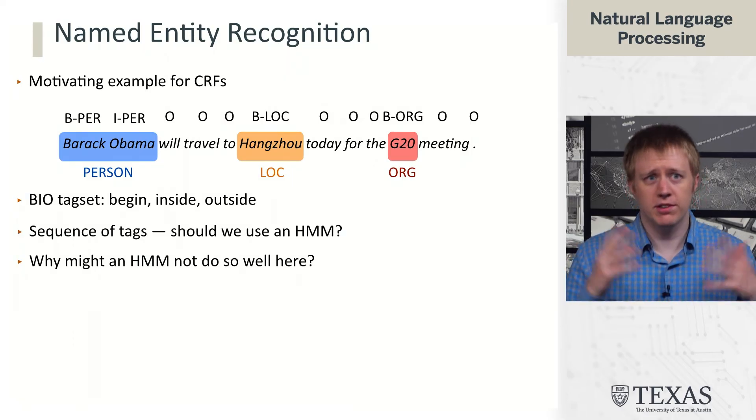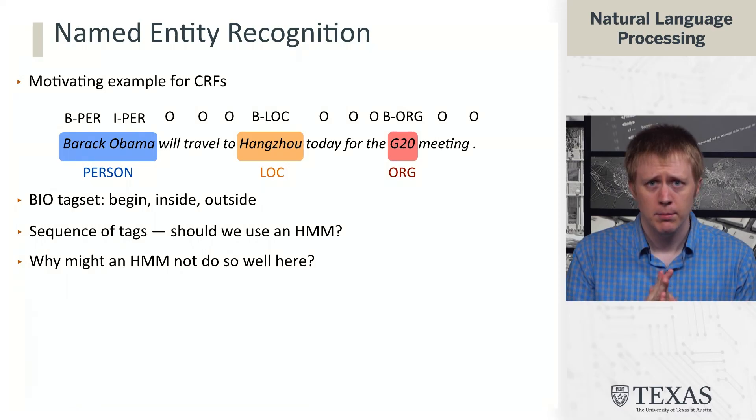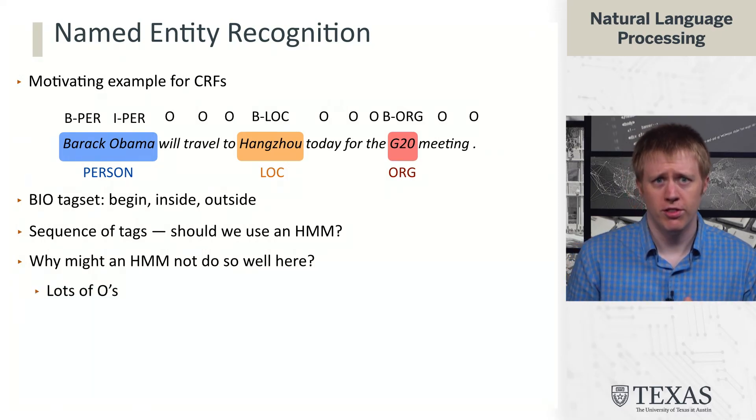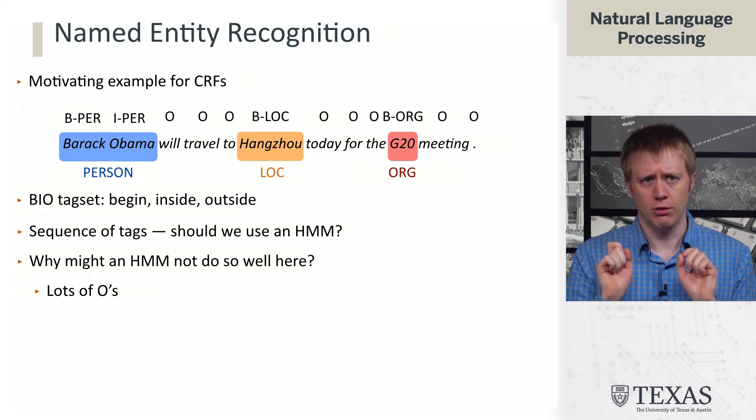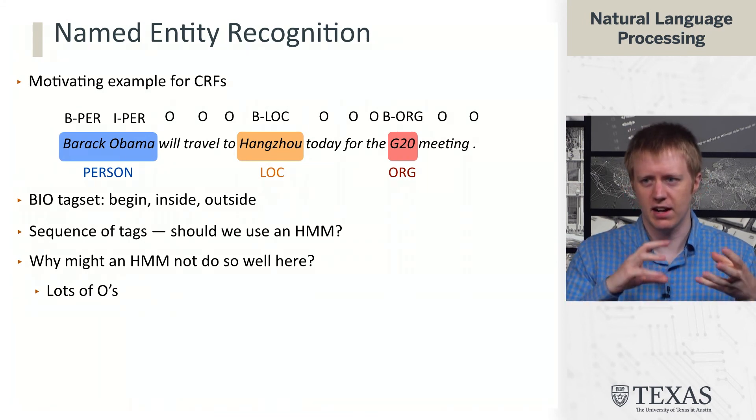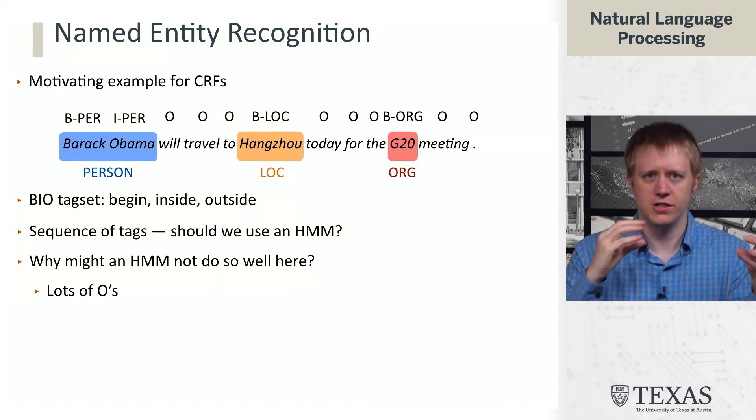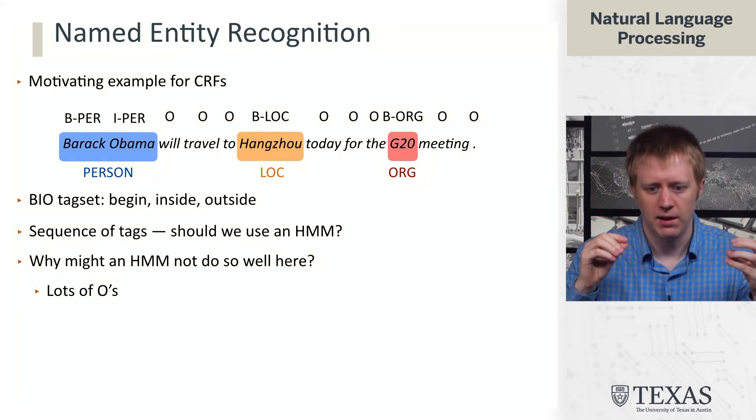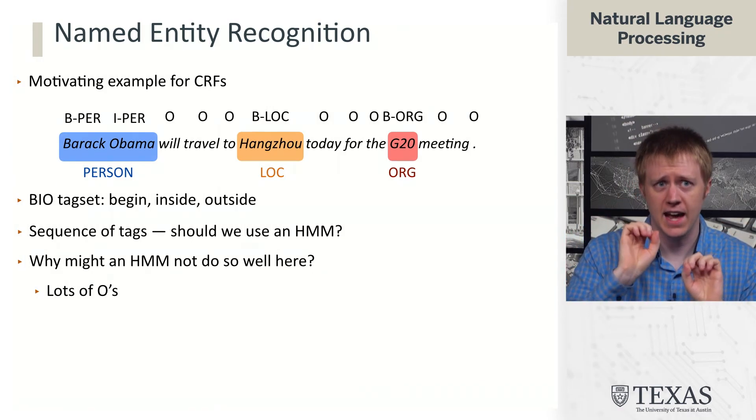So this is a sequence of tags, so we could just throw an HMM at this problem and we've already developed all the machinery to do that. But it might not work so well here. And the reasons are twofold. The first is that there's going to be a lot of O's. So HMMs are these models that kind of get dependence between adjacent words based on the tag set. Each word is conditionally independent of all the others given its tag.